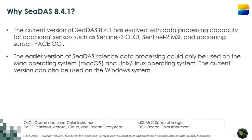Why CDAS 8.4.1? The current version has evolved with data processing capability for additional sensors such as Sentinel-3 OLCI, Sentinel-2 MSI, and PACE sensors. Earlier RSET trainings used CDAS 8.1, where Sentinel-3 OLCI and Sentinel-2 MSI were not available — they became available since version 8.3. More importantly, the earlier version did not allow science processing on Windows; a virtual machine was required. This version can be installed and used on Windows machines for science data processing.